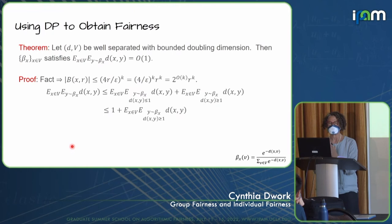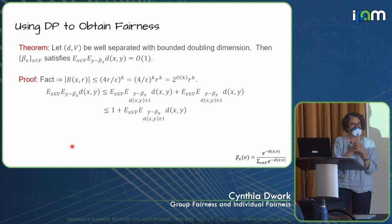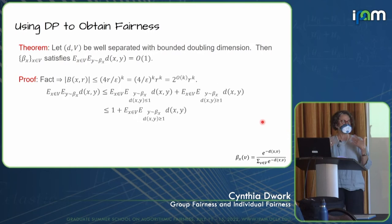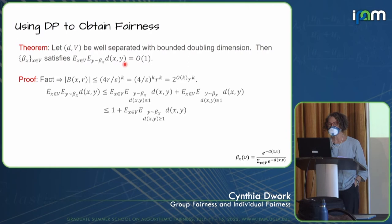We have the following fact: suppose S is a set of points in a metric space with doubling dimension at most k. If S is contained in a ball of radius r and the points are well-separated, then the size of S is at most 4r over epsilon to the k — equivalently, 2 to the O of k times r to the k. You can't stuff too many points in such a ball without violating well-separatedness. Here's our theorem: suppose the metric space is well-separated and has bounded doubling dimension. Then the mappings defined by the exponential mechanism satisfy that in expectation, you're going to be mapped to somebody close by — similar people will be mapped similarly.